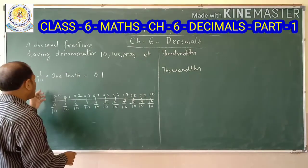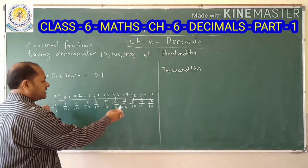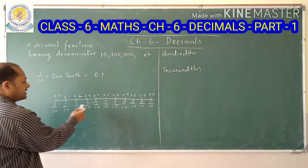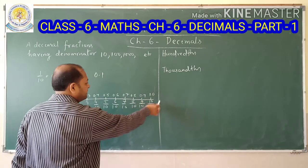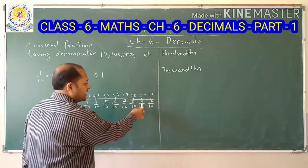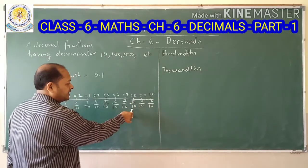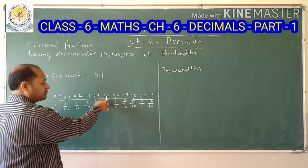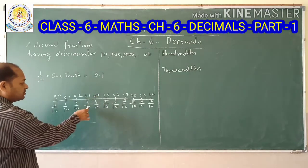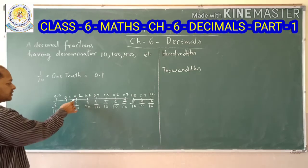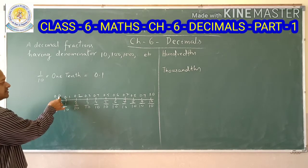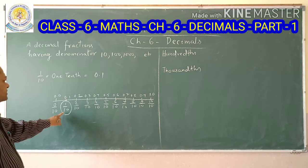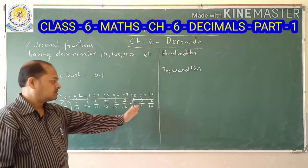Now, how can you represent 1 by 10 on the number line? On a number line, if we divide 0 to 1 into 10 equal parts, we get 0, 1, 2, 3, 4, 5, 6, 7, 8, 9, 10. The first part is 0 by 10 and the last part is 10 by 10, which equals 1 or 1.0. So 1 by 10 is the first division on the number line.